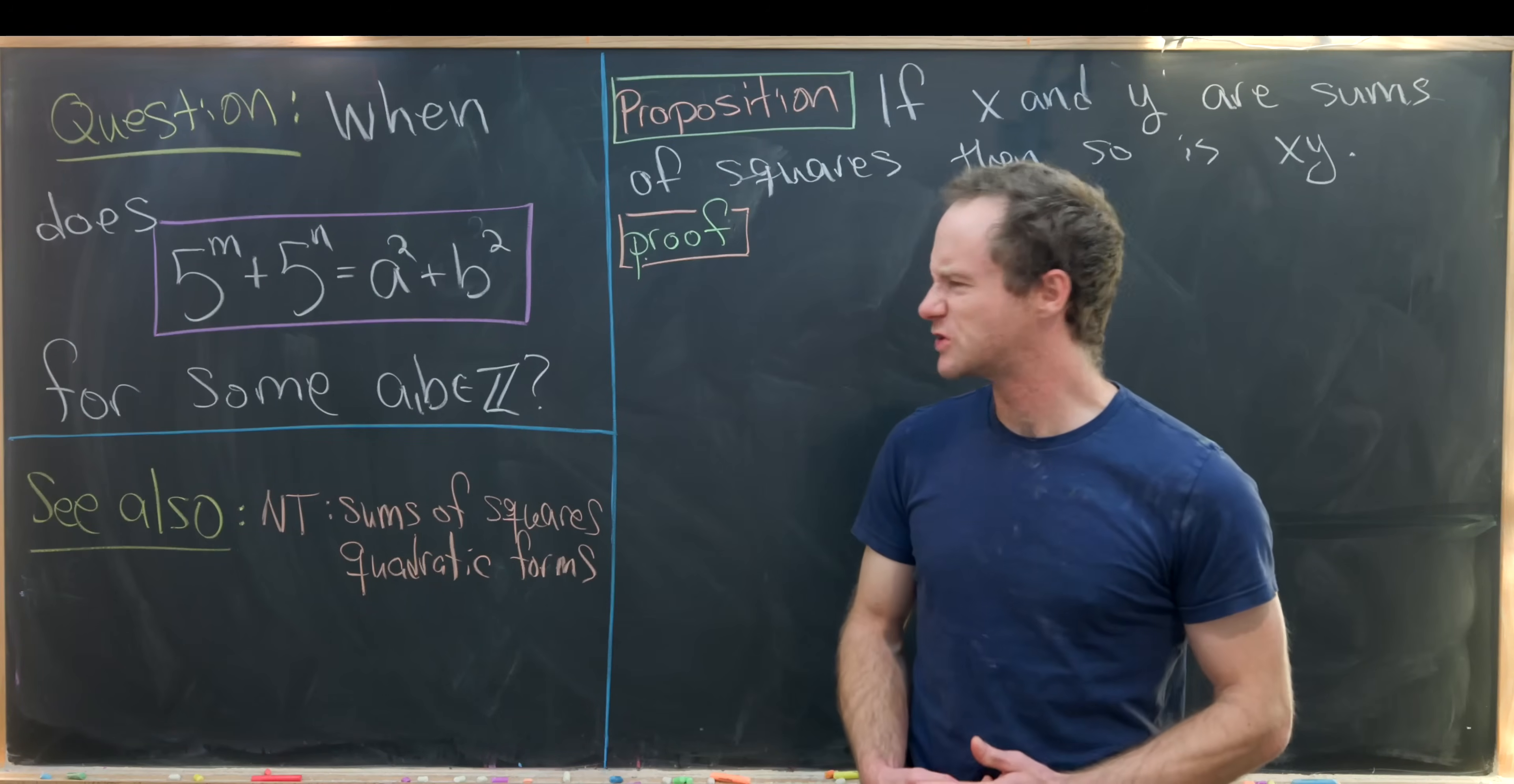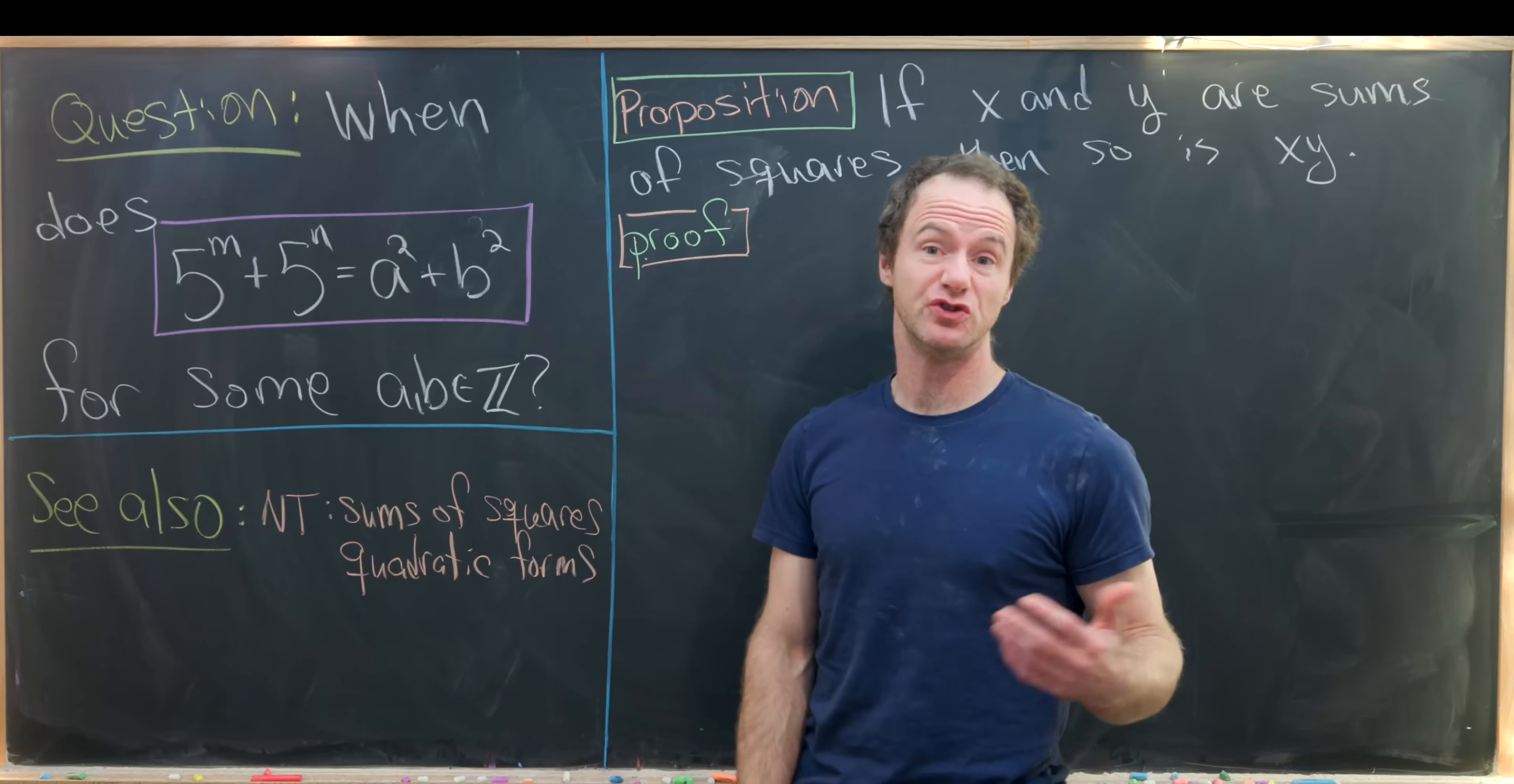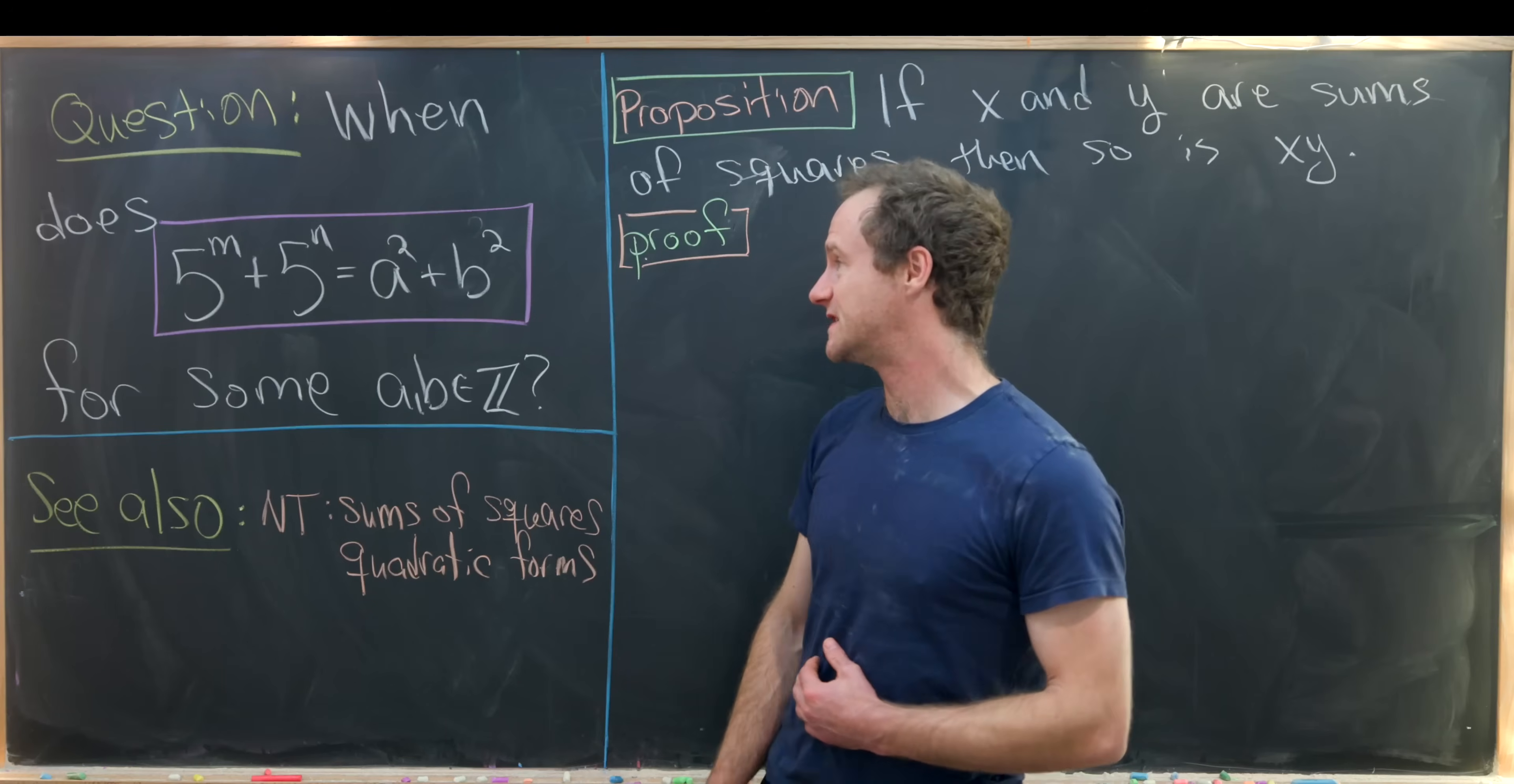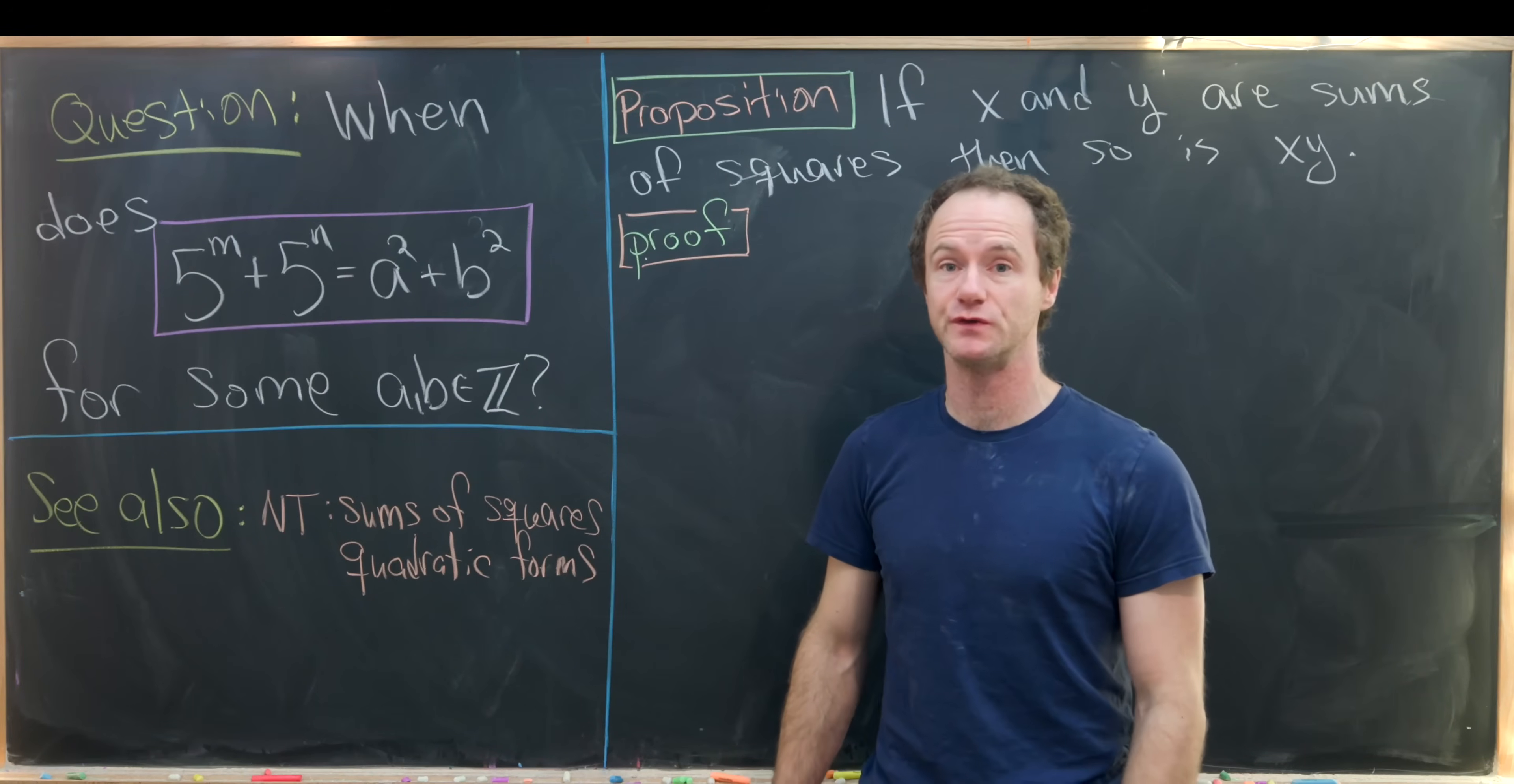Here I've got a nice problem which would be equally well suited on a math contest as well as on a homework or exam question for a junior or sophomore level college number theory course. So our goal is to determine when 5 to the m plus 5 to the n can be written as the sum of two squares.